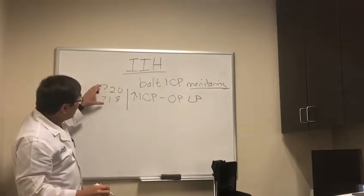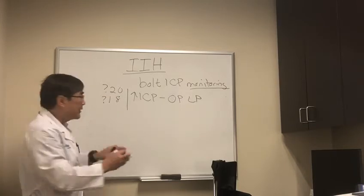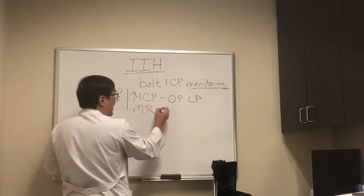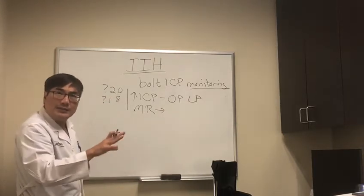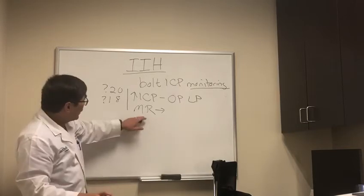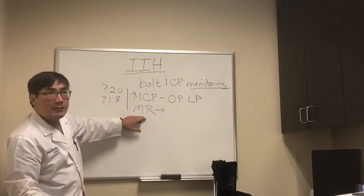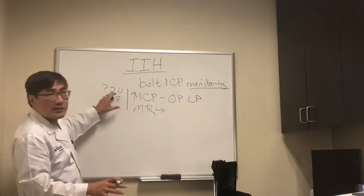In these patients we're going to have to rely on both the radiographic features of increased intracranial pressure. On MRI what we're going to be looking for is fluid in the sheath, flattening of the globe, empty sella, and stenosis of the distal transverse sigmoid sinus. If we have a 20 plus the MRI features of increased ICP, that's kind of good enough.